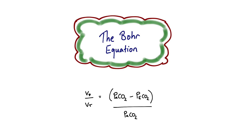In essence, the Bohr equation gives us a ratio of dead space volume as a proportion of tidal volume, and it focuses on the physiological dead space. It does this by equating it to some terms involving CO2. The equation itself at first glance can look not particularly appetising, but hopefully by the end of this video we'll have gone through the physiological principles and you'll be in a position to explain this in a Viva scenario.